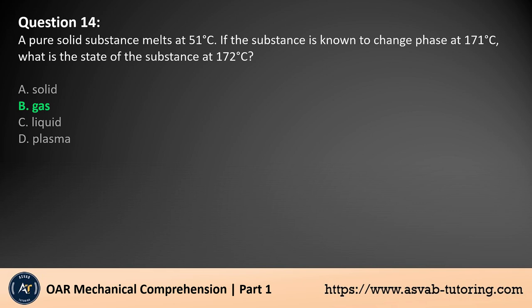A substance that melts at 51 degrees Celsius and changes phase — presumably boiling or subliming — at 171 degrees Celsius will be in a solid state below 51 degrees Celsius, a liquid between 51 and 171 degrees Celsius, and in a gas state above 171 degrees Celsius. Therefore, at 172 degrees Celsius, the substance is in the gas phase.